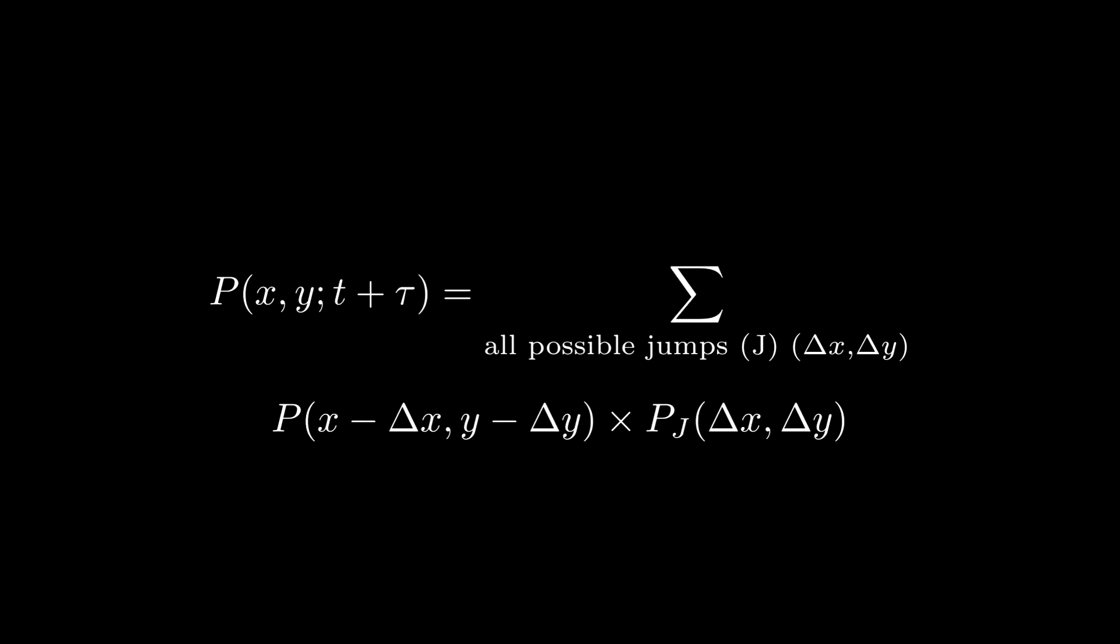Since the number of possible jumps is continuous, this sum must be replaced by an integral.